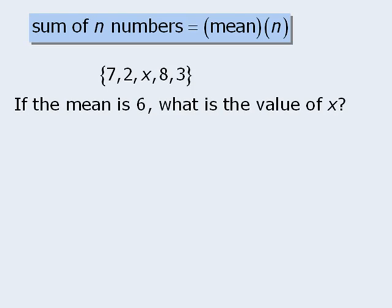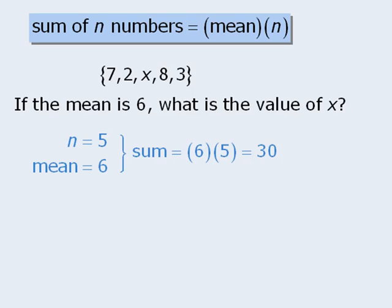Notice that if we find the sum of all five numbers in this set, then we can determine the value of x. In this set, we have five numbers, which means n equals 5, and we are told that the mean of the numbers is 6. When we apply our formula, the sum of the numbers equals 6 times 5, which is 30.